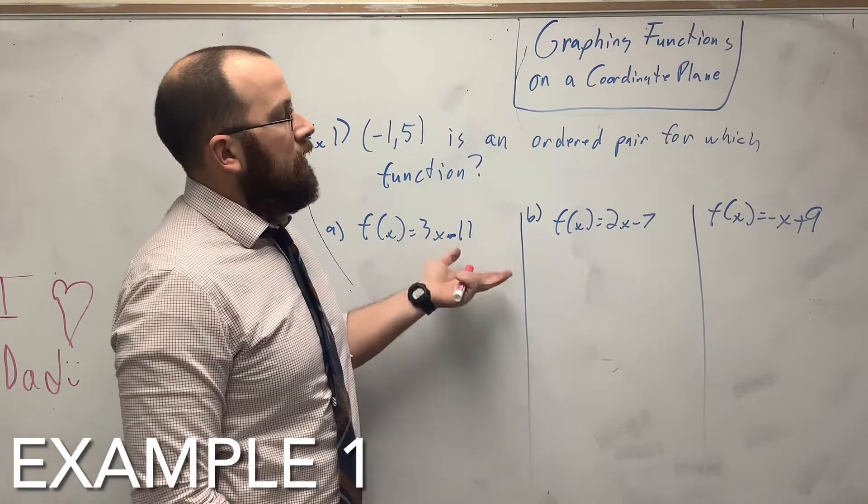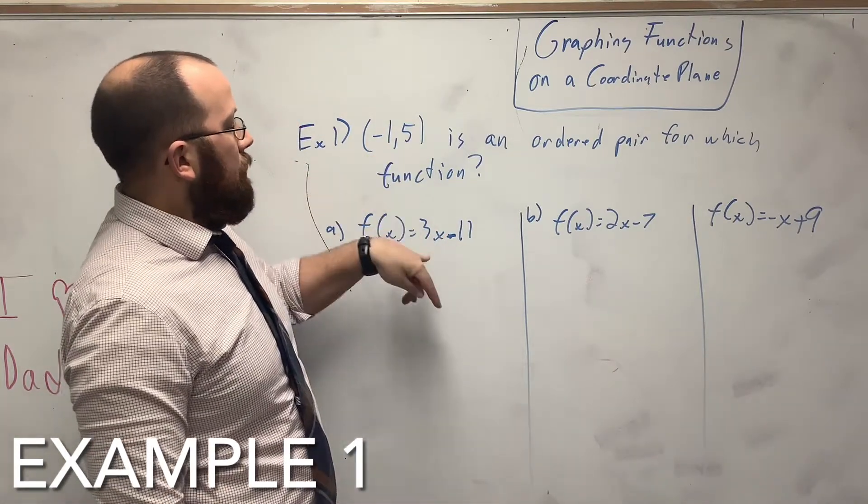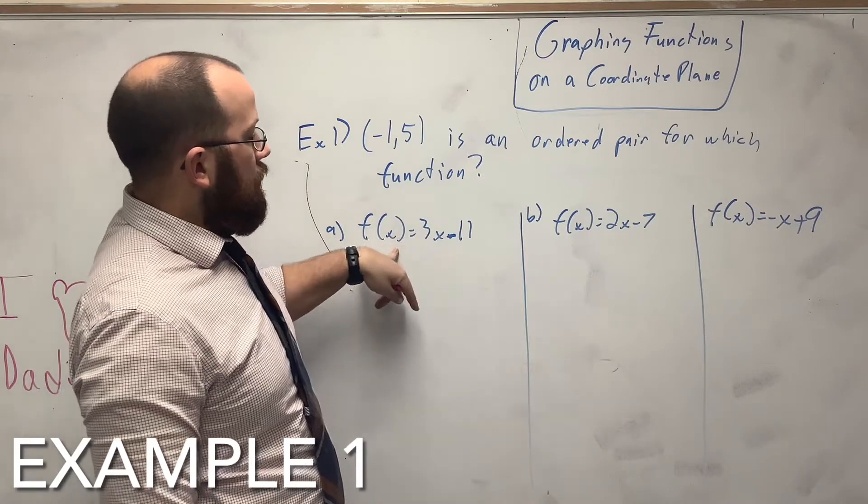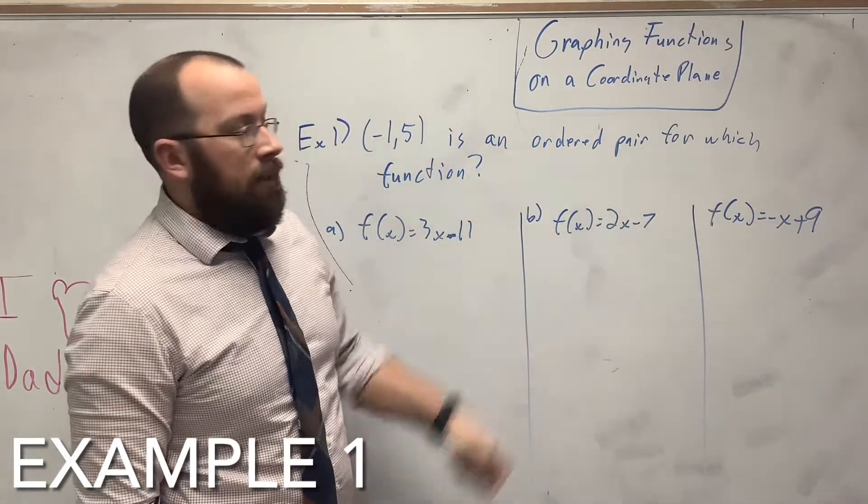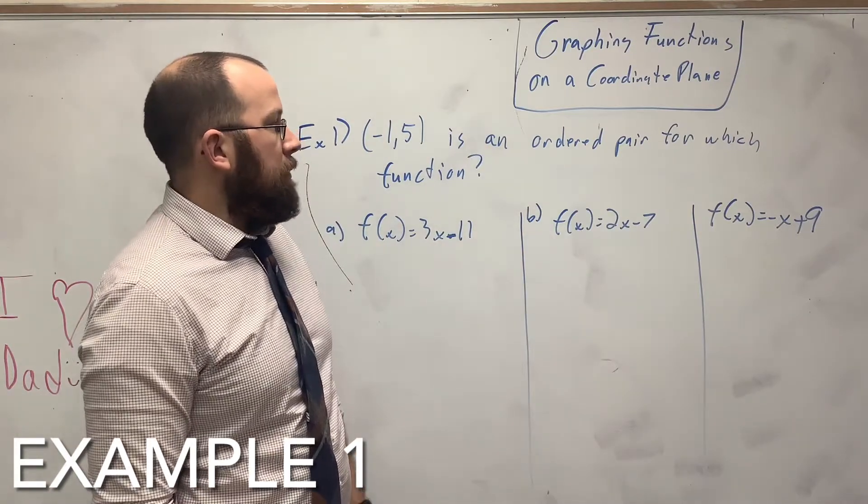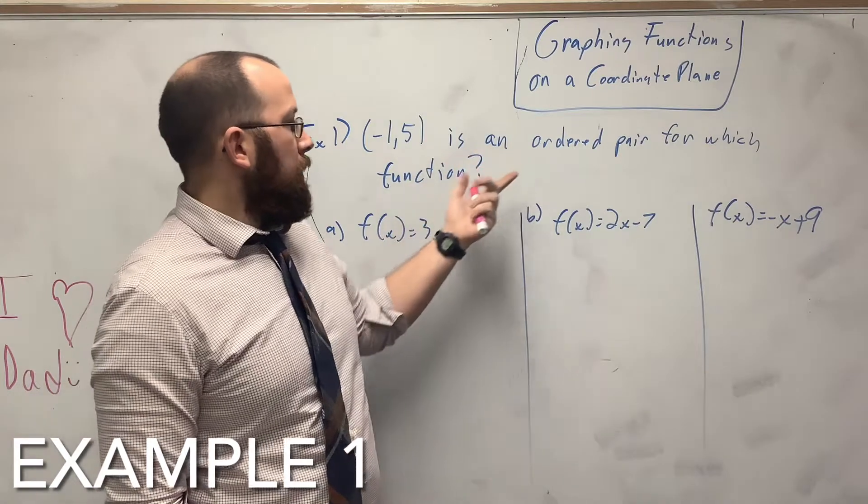This is what we've done in other lessons. Basically, it's just plugging in a point to each of these functions to see if it matches up, if it's the ordered pair for that function. So, negative 1, 5 is an ordered pair for which of these.